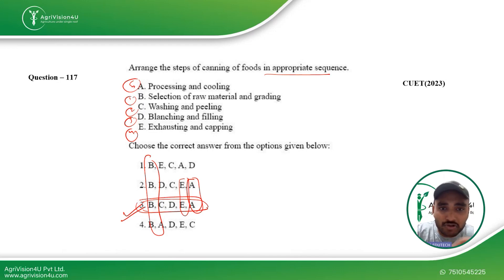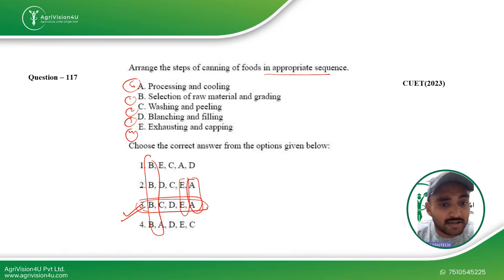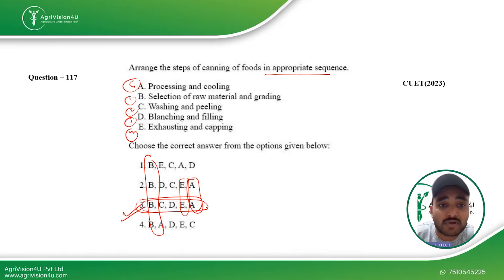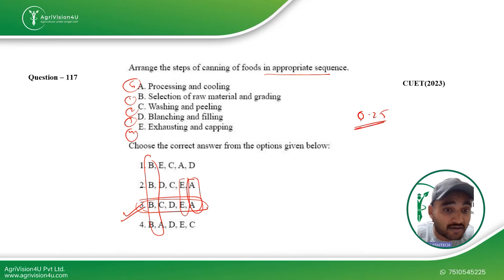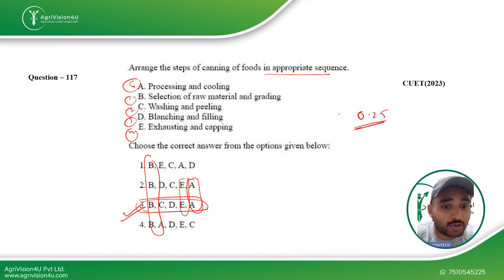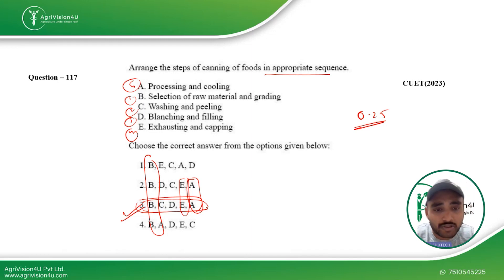Be very wise when selecting answers. You should never just pick options carelessly. There is a negative marking of 0.25, so be very well aware of that. Don't attempt too many wrong questions, as that will only result in a loss for you.